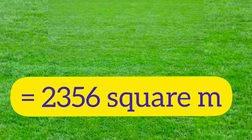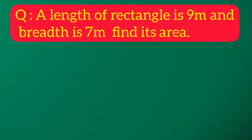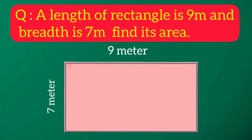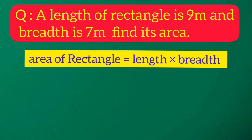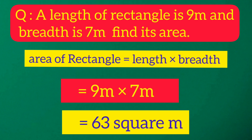He sowed the grass in 2356 square meters. Now let's do a question related to it. The length of a rectangle is 9 meters and its breadth is 7 meters — find its area. Look at this rectangle: its length is 9 meters and breadth is 7 meters. Area equals length into breadth, that is 9 meters into 7 meters, which equals 63 square meters.